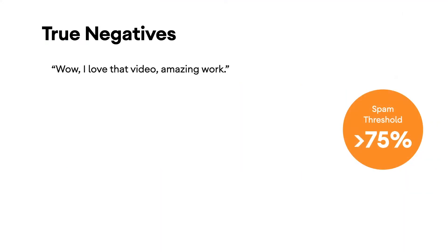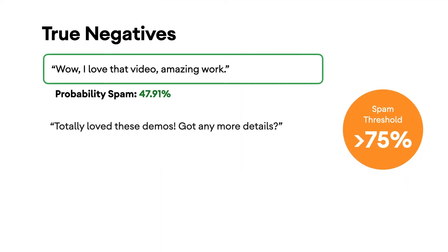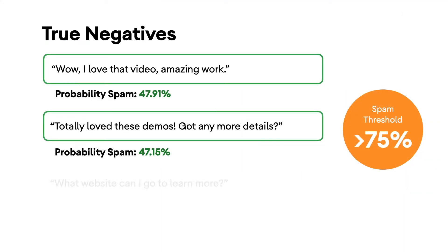Let's take a look at the performance of our first approach. Here you can see the predictions of spam from the sentences above. In our first codelab, you set the threshold for spam to be 75% or greater. So for all of these legitimate comments, none are marked as spam. So far, so good.